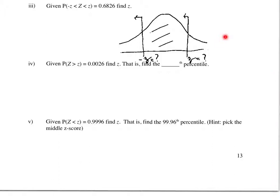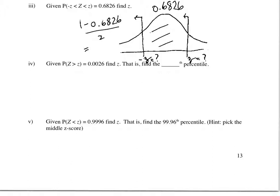We know that the area in here is 68.26. To use the tables, we need the left-side area. We take the entire curve's area — one — minus this in-between part, and that gives the two outer parts. But I don't want both; I just want a single one, so I divide by two and find this area underneath the curve to the left of negative Z.